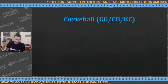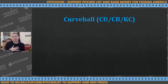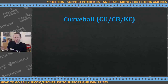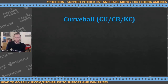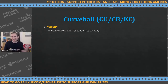Curveballs are completely different from everything else — labeled as CB, CU, or KC for knuckle curve. I prefer CB because CU can be confusing with changeup or cutter. Velocity is your biggest key for curveballs — if it's in the mid-seventies and the pitcher throws in the nineties, it's a curveball. That's your biggest hint. Generally 15 to 20 miles per hour slower than the four-seamer.